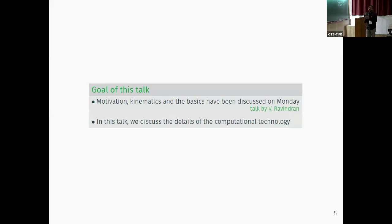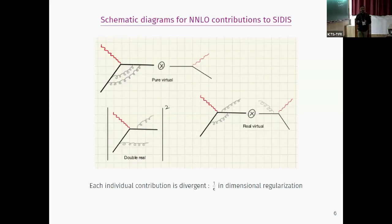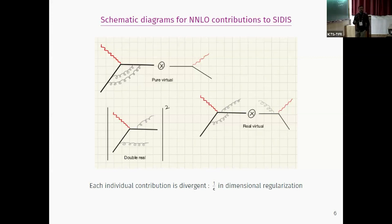The goal of this talk is to discuss how we compute all these things. At second order you need two-loop corrections. We have the process at the partonic level, and there can be two gluons in the loop — those are the pure virtual corrections. There can also be one gluon in the loop and one real emission, a different process where an extra gluon appears, and if you integrate over the phase space of the gluon that also contributes at alpha_s-squared.